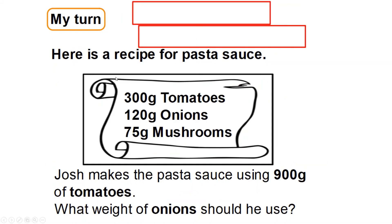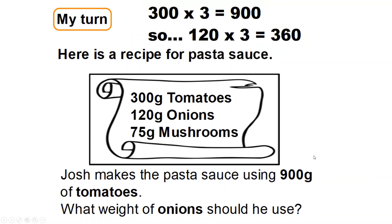Here is a recipe for pasta sauce. Josh makes the pasta sauce using 900 grams of tomatoes — what weight of onion should he use? The recipe uses 300 grams of tomatoes and 120 grams of onions. 300 times three is 900, so whatever I do to the tomatoes I do to the onions. I want three lots of sauce, so 120 times three equals 360. So for 900 grams of tomatoes, he needs 360 grams of onion.